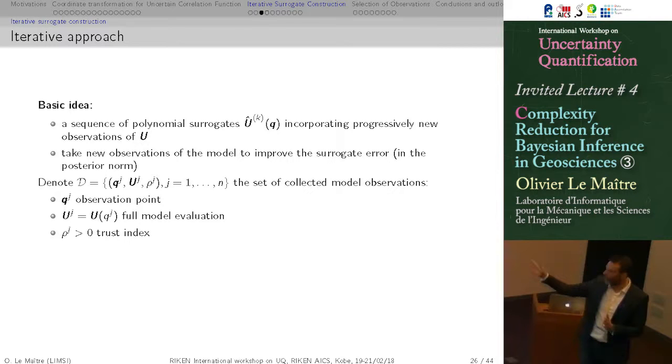So the way we update the surrogate is by taking new observations that are drawn from the current posterior estimation. In the following, I will denote d, a set of coordinates, function or predictions value, and also this triplet has a last component that is rho j, which is a trust index that I will explain later.